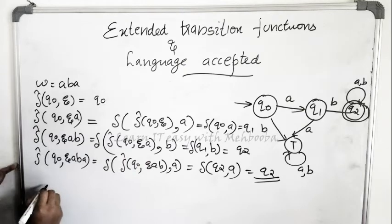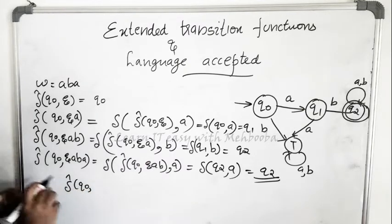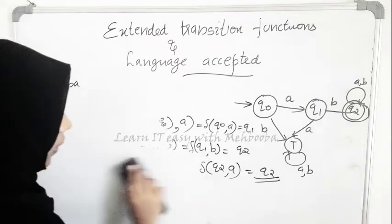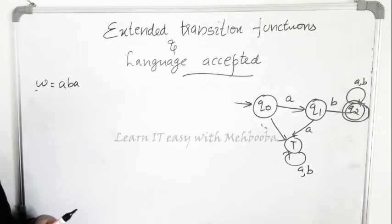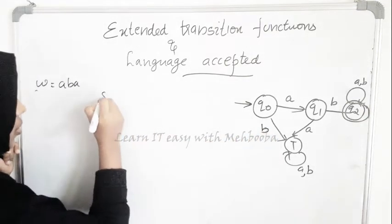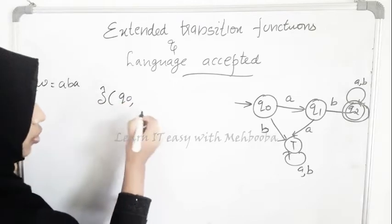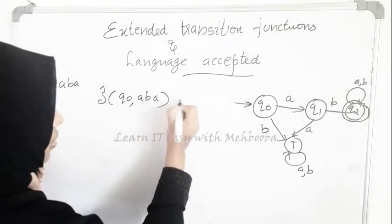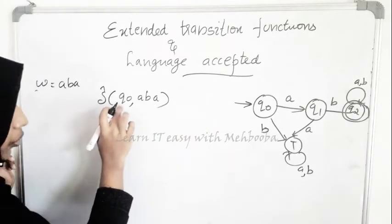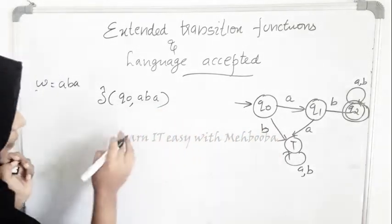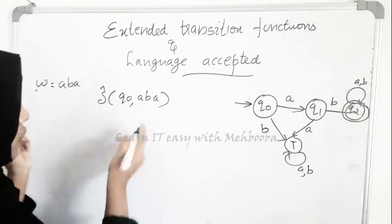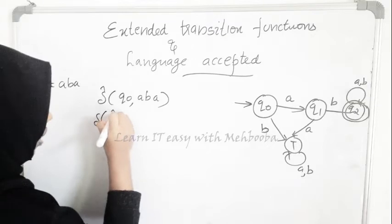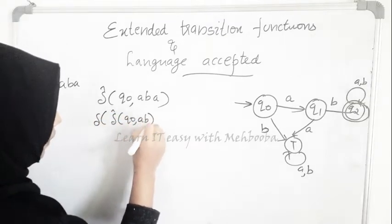You can also do it directly. If you want to check with the help of delta-cap whether q0 given the string ABA will reach the final state, you write delta-cap(q0, ABA). This can be written as delta of delta-cap(q0, AB), comma A.